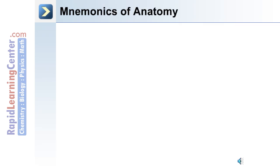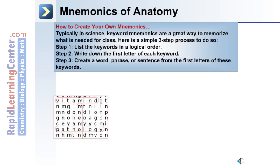A great tip for learning anatomy is the use of a mnemonic. Mnemonics are a great way to memorize what's needed. Follow this simple three-step process to make them: in step one, list the key words in a logical order; in step two, write down the first letter of each key word; and in step three, create a word, phrase, or sentence from those first letters.